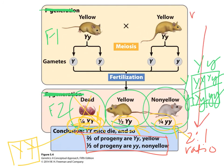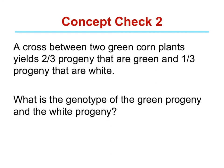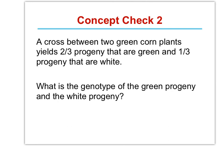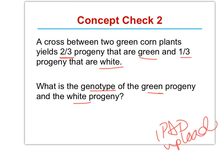This is the only time you'll ever see it — so that should be a big clue. Hints for the exam. Here's a little check: a cross between two green corn plants yields two-thirds progeny that are green and one-third that are white. What is the genotype of the green and white progeny? Make this an iPad upload, number 7, September 15th, and we'll go over it in class. Make sure you work this out, take a screenshot, and upload.